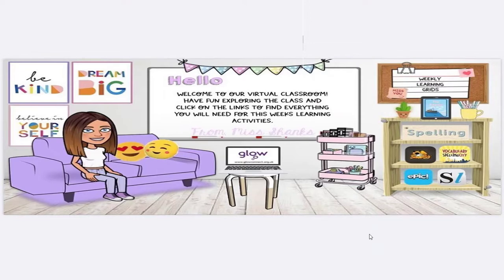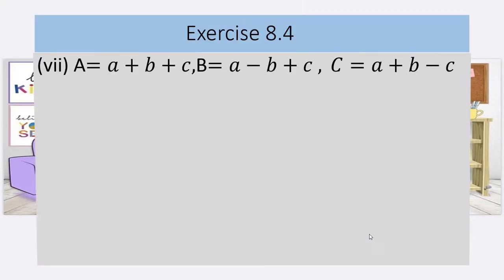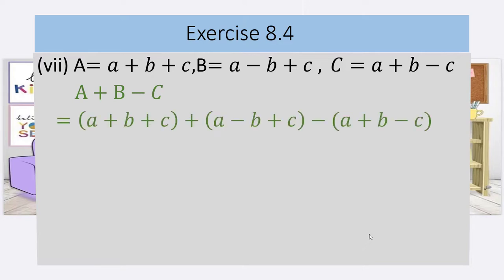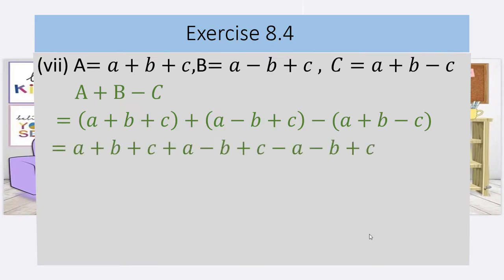Now we will discuss Part Number 7. A equals a plus b plus c, B equals a minus b plus c, C equals a plus b minus c, and we have to find A plus B minus C. First we write A's expression, then plus B's expression, then minus C's expression. Remember: only the expression being subtracted has its signs changed — the one being added does not.